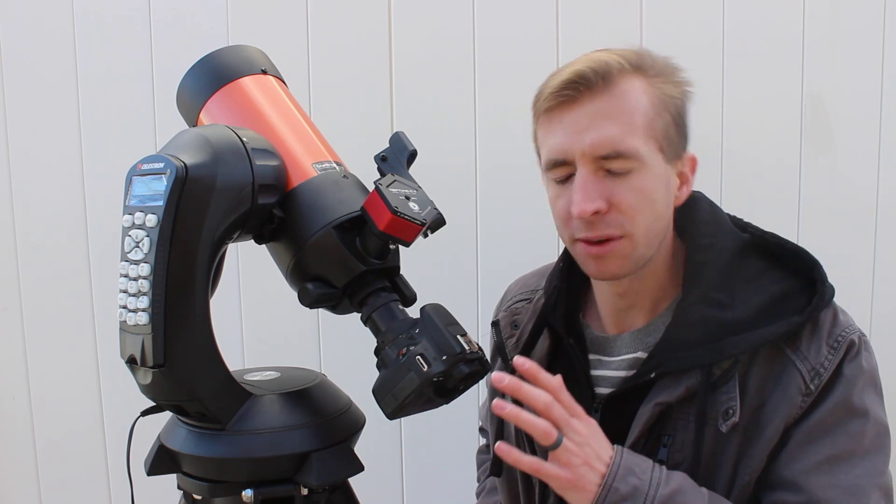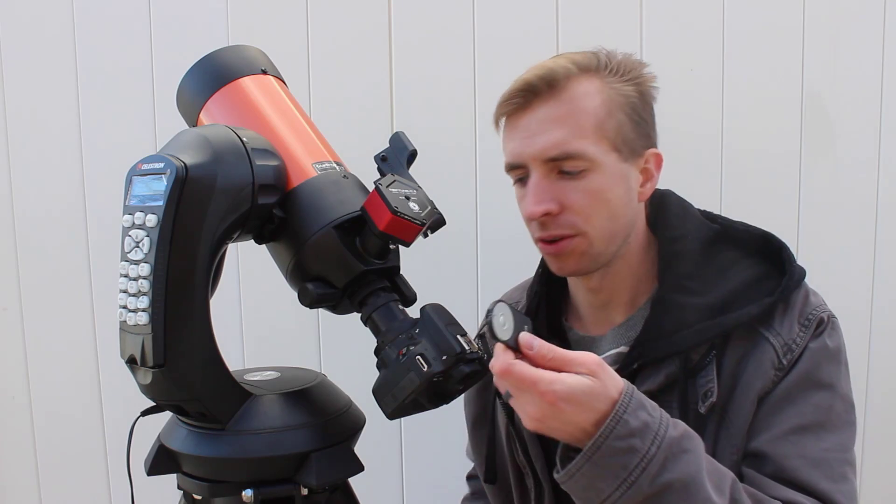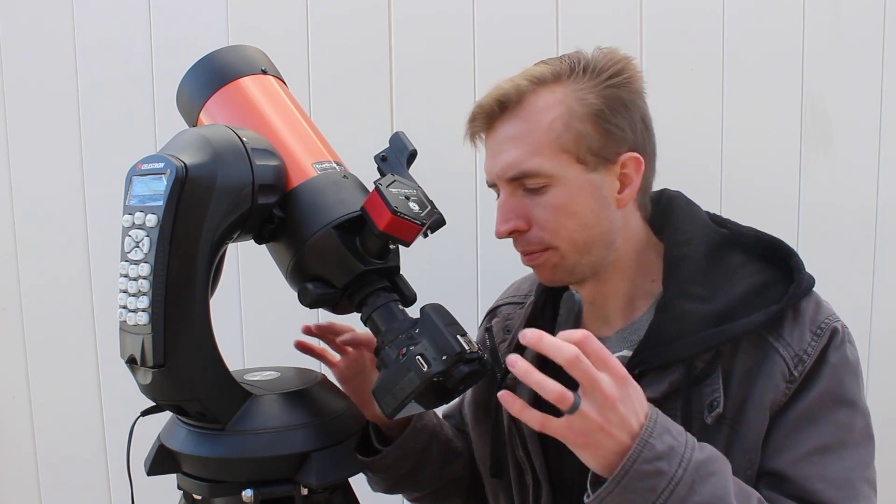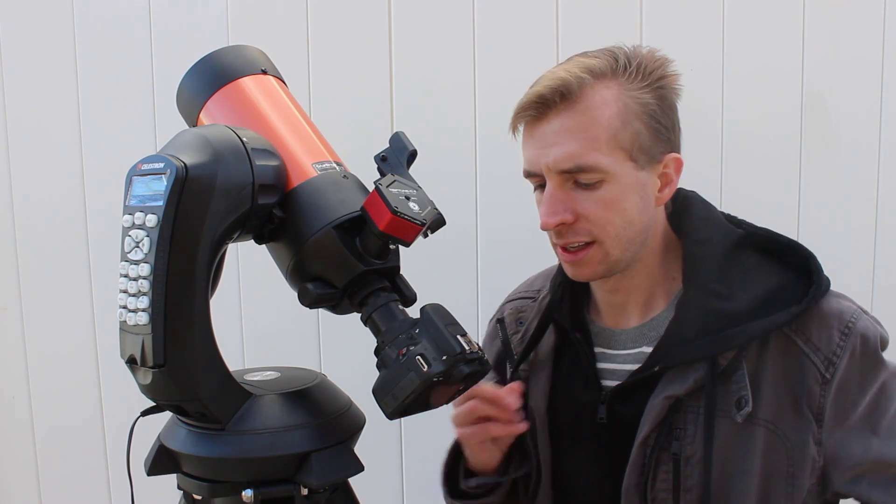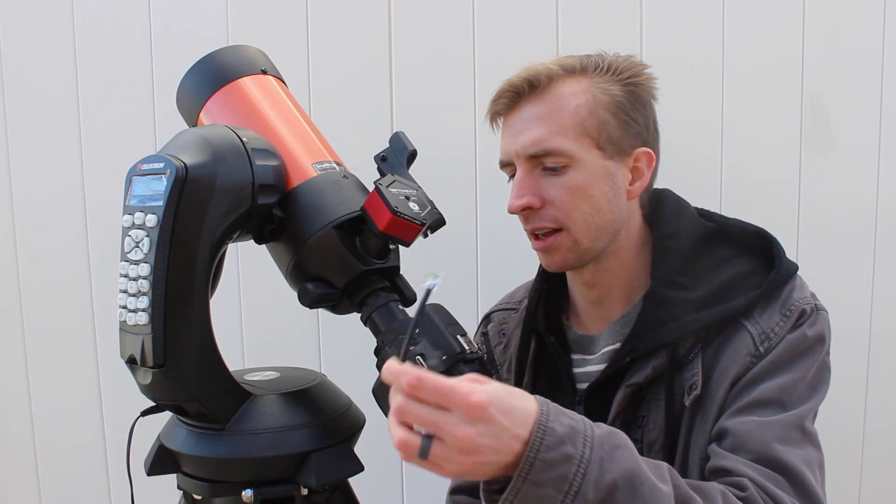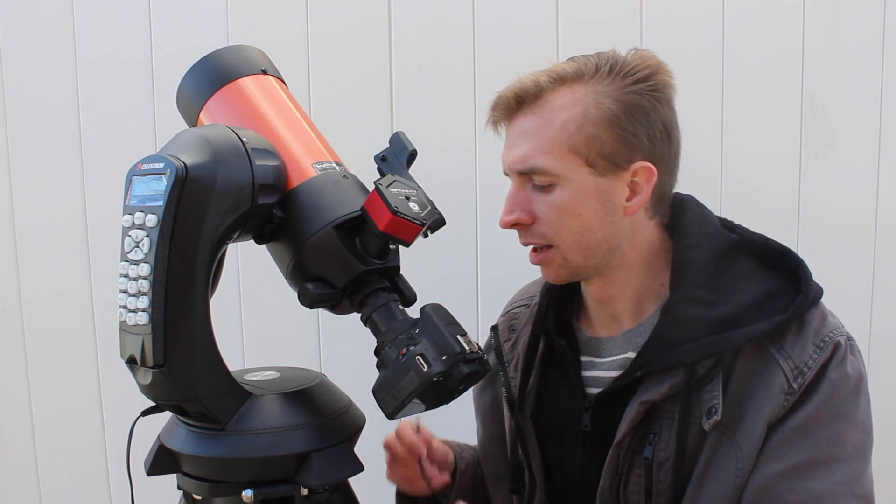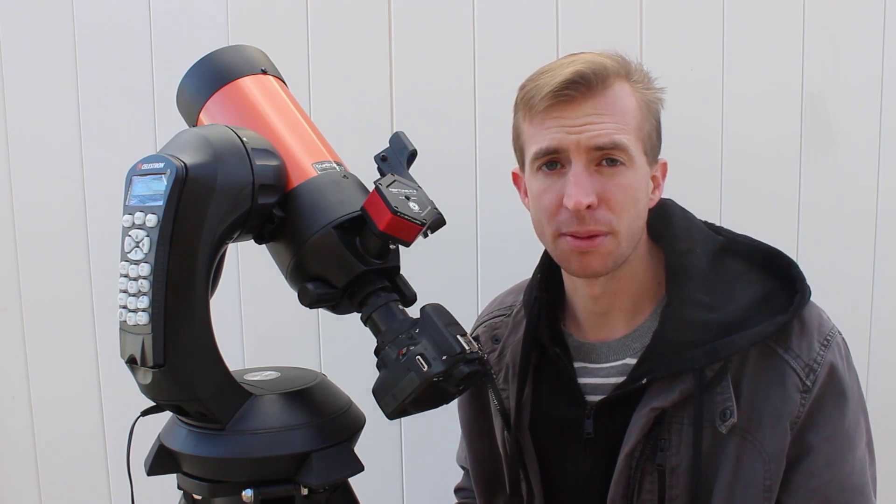One thing I definitely recommend, though, if you're going to use a DSLR, is to use a wireless shutter control so you don't make your mount move and vibrate and blur your photos. Or use the included shutter release from Celestron. So if you're able to connect this to your DSLR, it will actually plug right into the mount, and you can release your shutter that way without vibrating your mount.